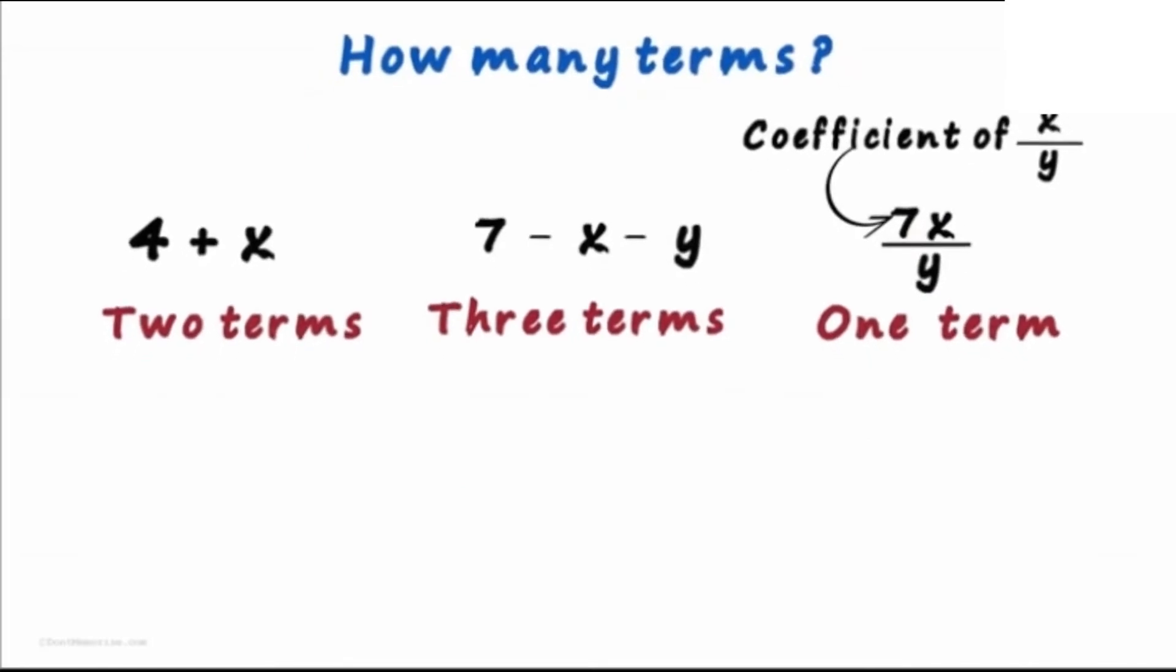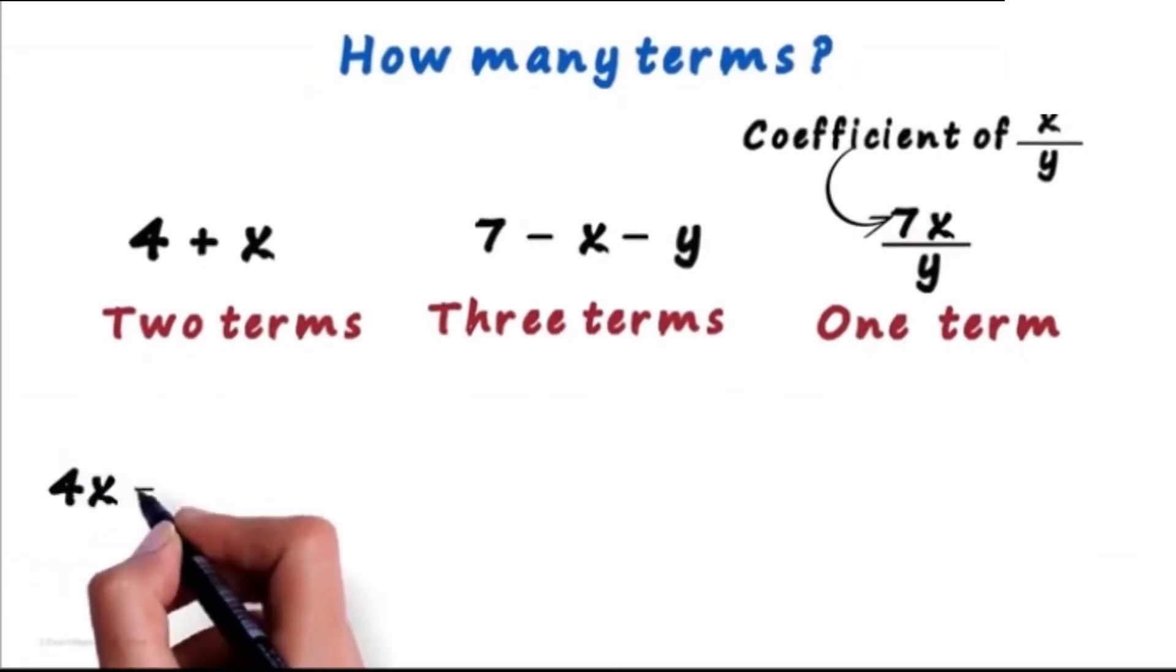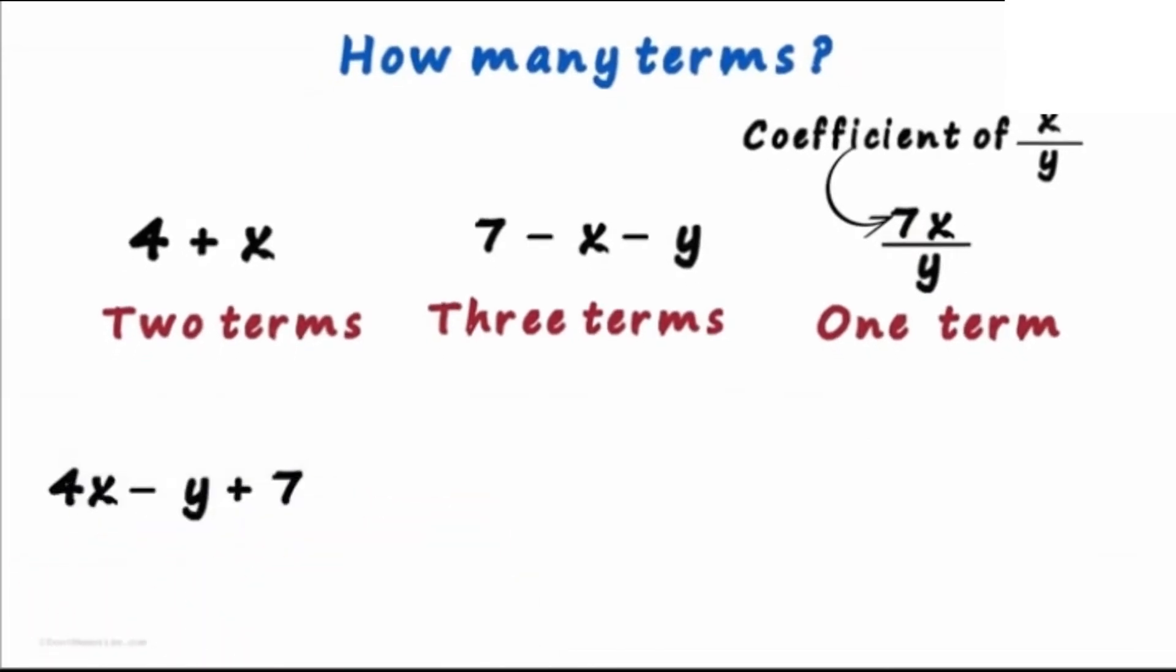How many terms do you think are present in 4x minus y plus 7? This is interesting. 4x is just one term since it involves multiplication. y and 7 are the other terms which are separated by a minus and a plus sign. So this expression has three terms in all: 4x, y and 7.